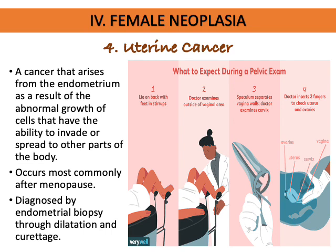Uterine cancer arises from the endometrium due to abnormal cell growth with the ability to invade or spread to other parts of the body. When diagnosed early, it has a favorable outcome; it occurs mostly after menopause with an overall 5-year survival rate of more than 80%. Diagnosis is through endometrial biopsy, dilatation and curettage, or pelvic exam. Note that pap smear is not useful for uterine cancer detection — pap smear is only for cervical cancer.